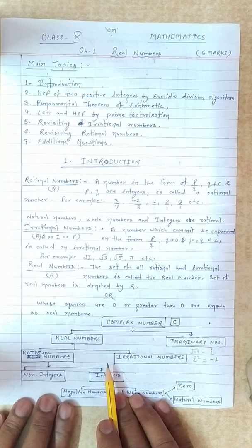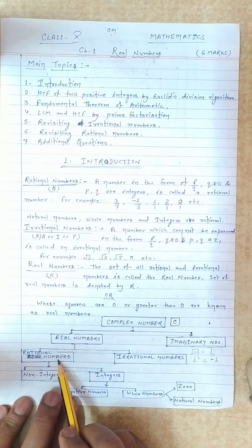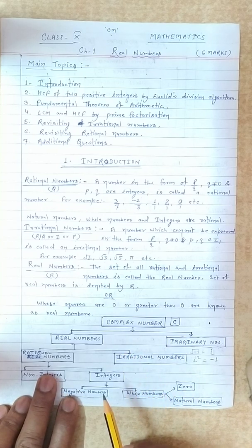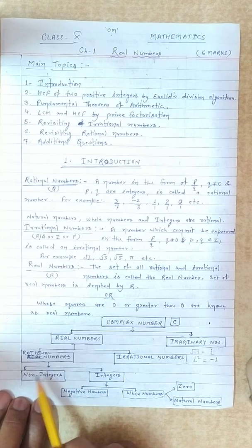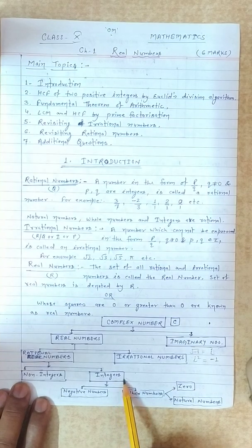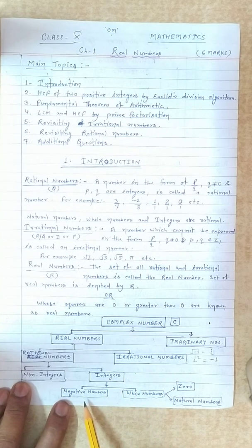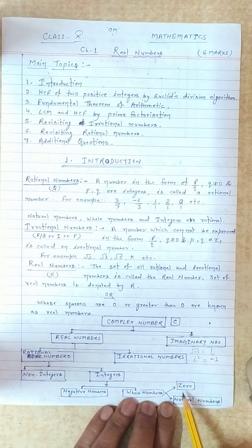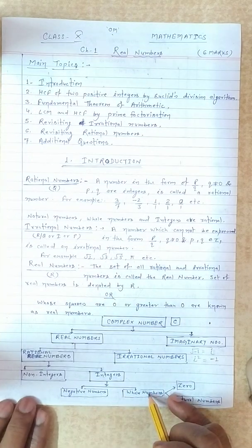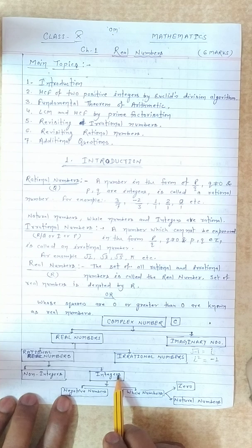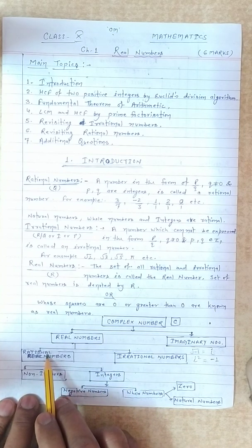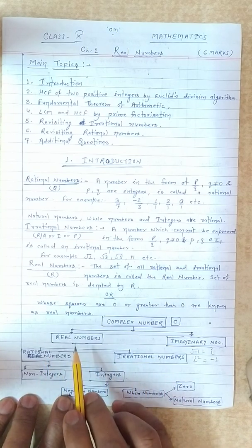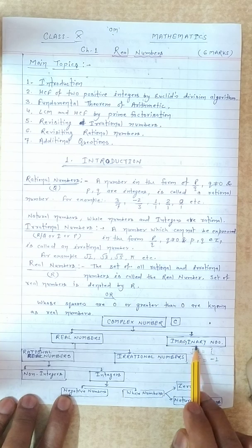Real numbers are classified into rational numbers and irrational numbers. Rational numbers are divided into non-integers and integers. Integers are divided into negative numbers and whole numbers. Whole numbers are divided into zero and natural numbers. Integers and non-integers together form rational numbers. Rational and irrational together form real numbers. Real and imaginary together form complex numbers.